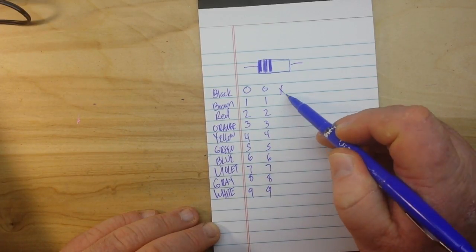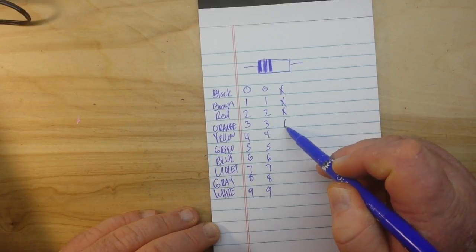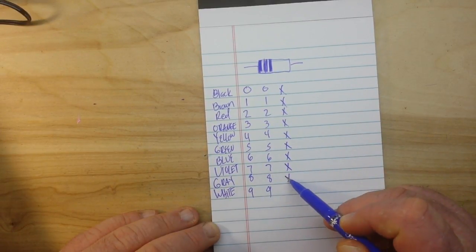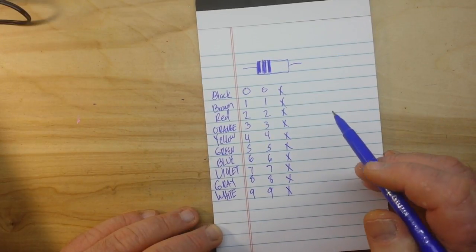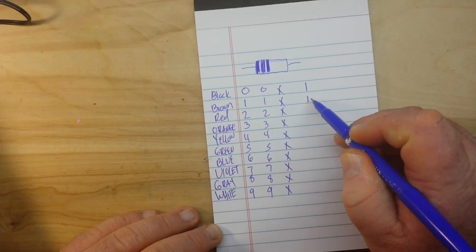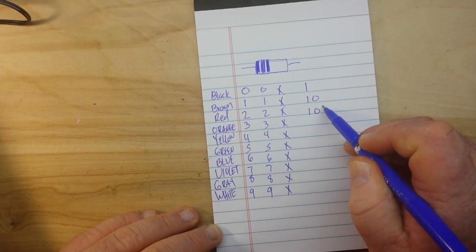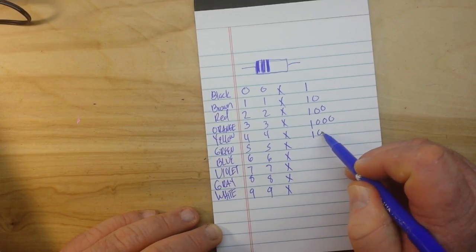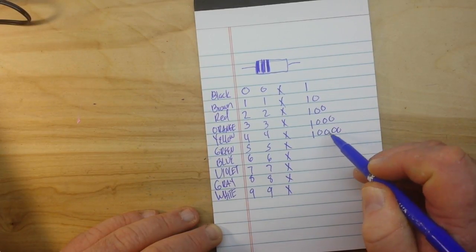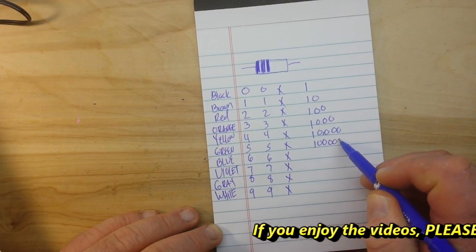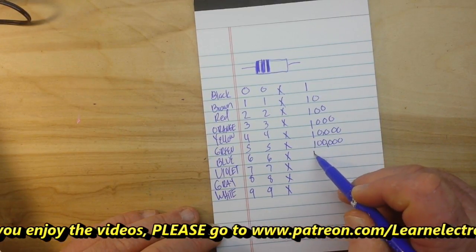The third band is our multiplier, and it goes like this: multiply by one, ten, a hundred, a thousand, ten thousand, a hundred thousand, a million.